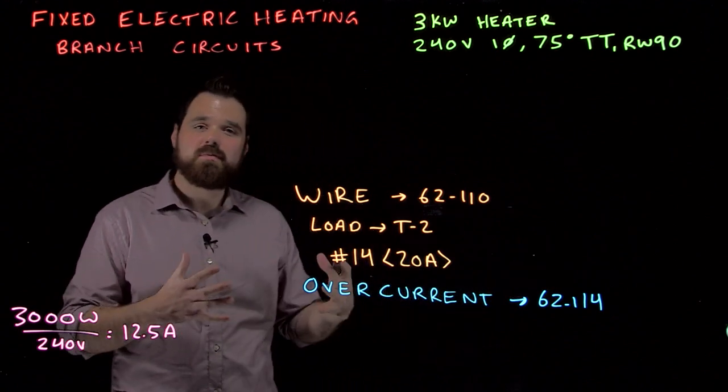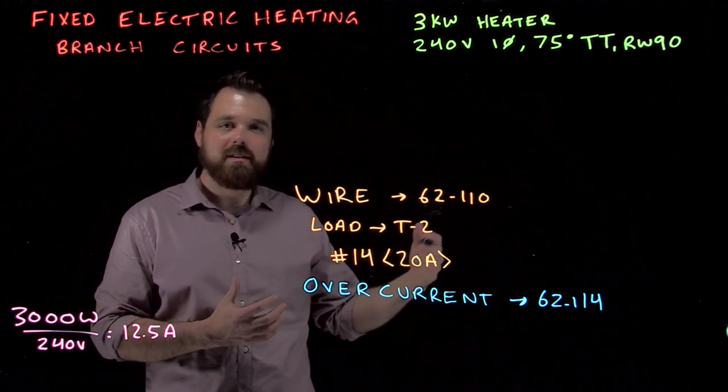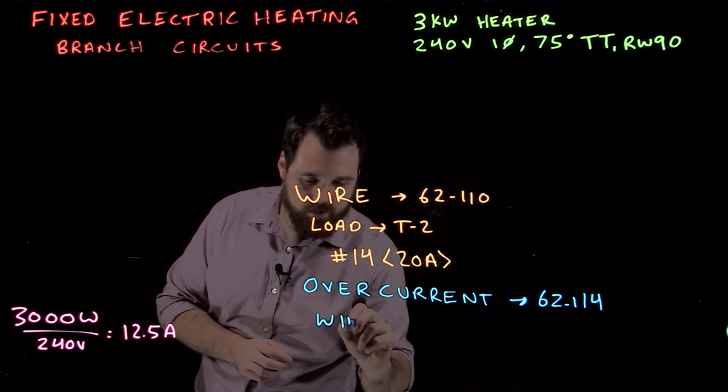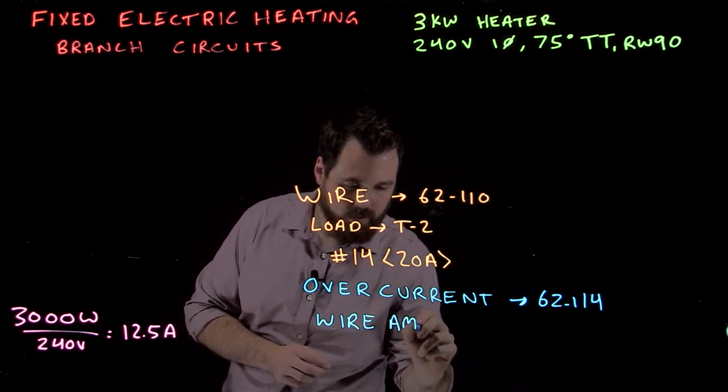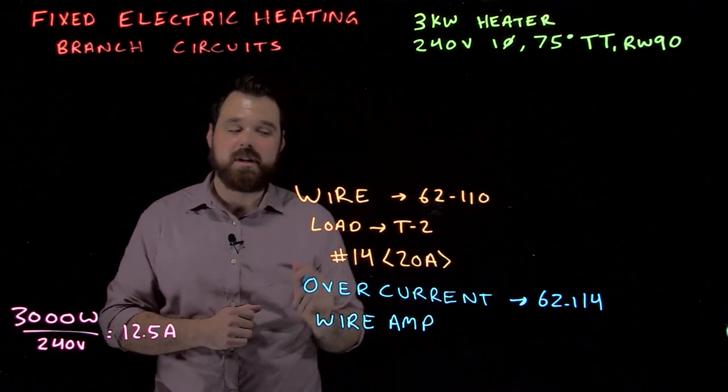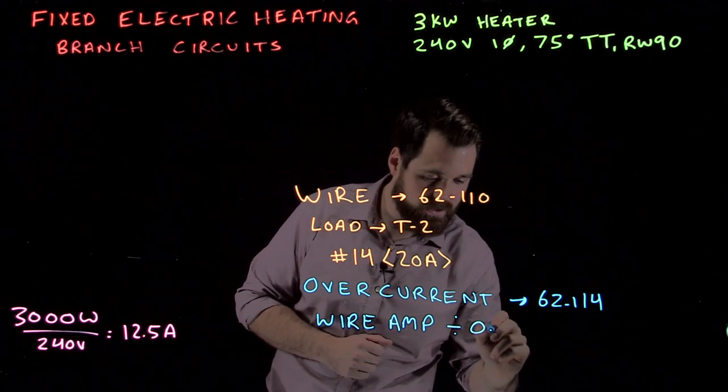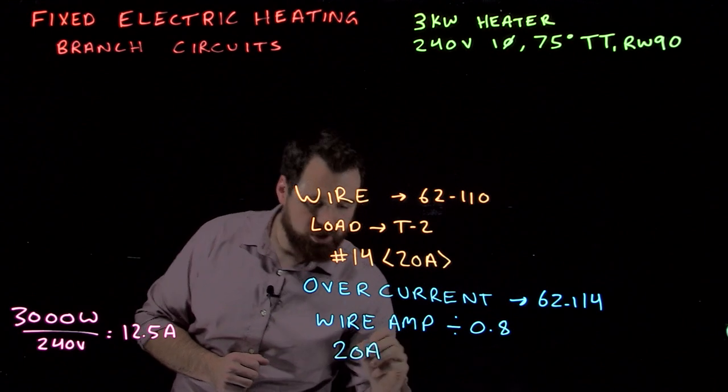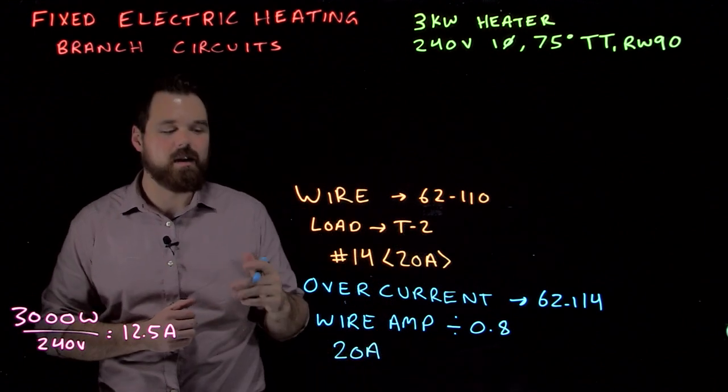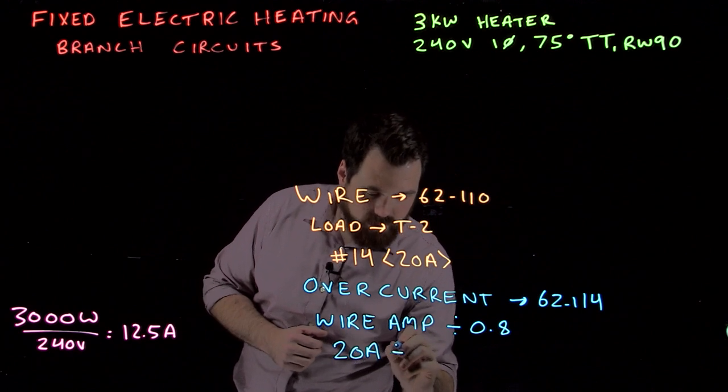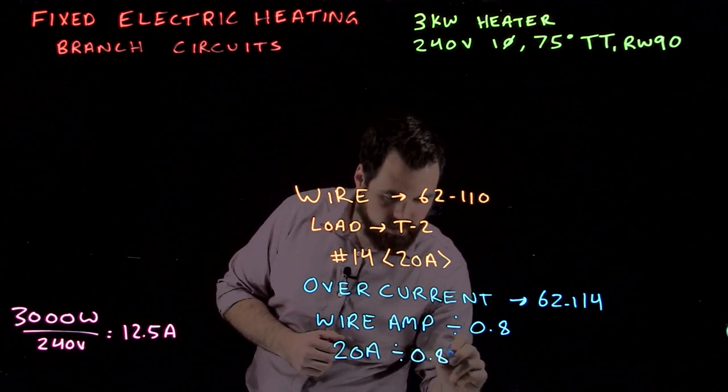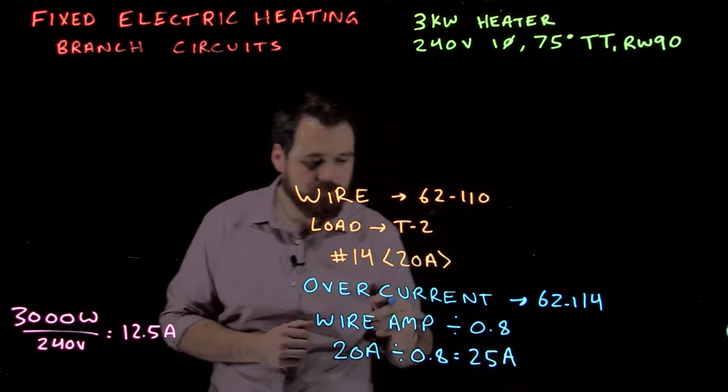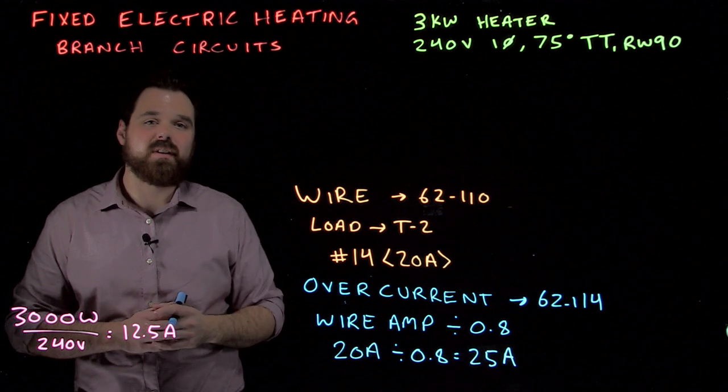So what this means is because the allowable ampacity of our wire cannot exceed 80%, what we do is we take the wire ampacity, which we got from table 2, and we divide by 0.8. So we go 20 amps, which is the allowable ampacity of our wire. We divide by 0.8 and that gives us 25 amps. So our breaker can be a 25 amp breaker.